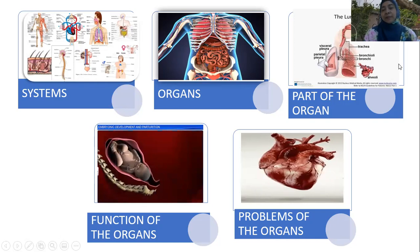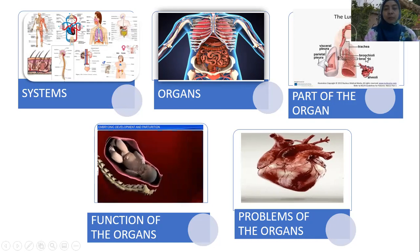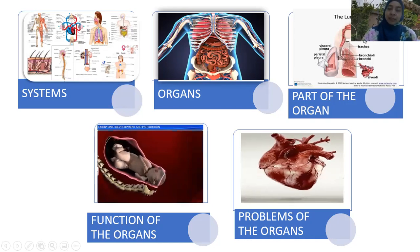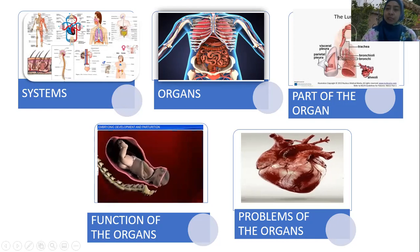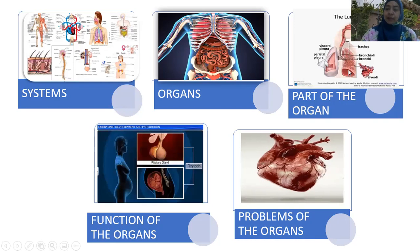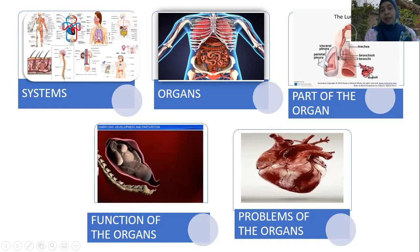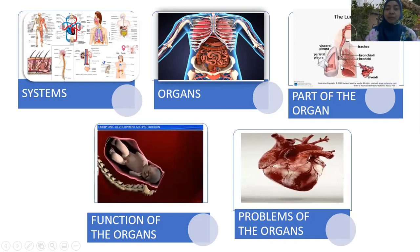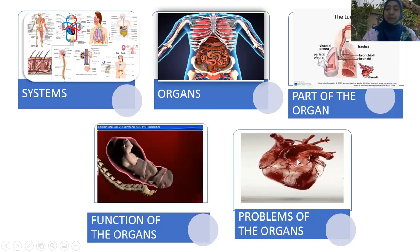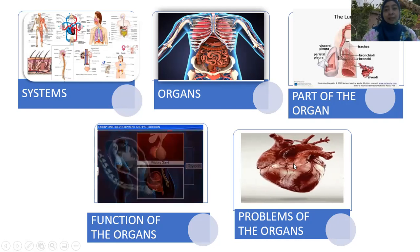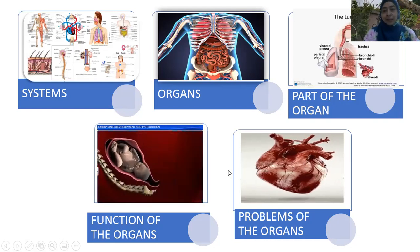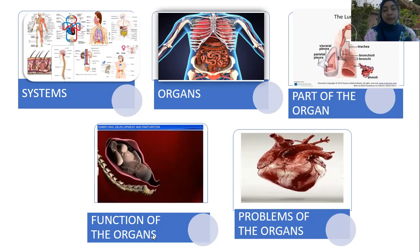Every organ in our body is built by parts of the organ. For example, in the respiratory system, the lung is built by the alveoli, the parietal pleura, and the visceral pleura. When we talk about the heart, there are many parts such as the left atrium, right atrium, and others that build that organ.